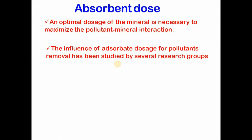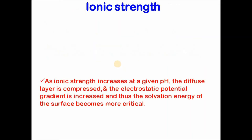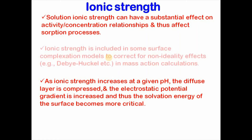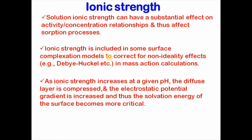Then comes adsorption dose. An optimal dose of the adsorbent is necessary to maximize pollutant removal, and the influence of adsorption dose on pollutants has been studied by several researchers. Then ionic strength. Solution ionic strength can have a substantial effect on the activity and concentration relationship, thus affecting adsorption processes. Ionic strength is included in some surface complexation models to correct for non-ideal behavior in mass action calculations. As ionic strength increases, the diffuse layer is compressed and the electrostatic potential gradient is increased, making the adsorption energy of the surface more difficult.